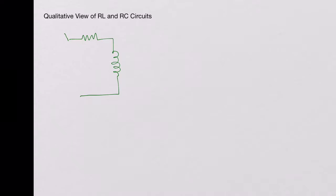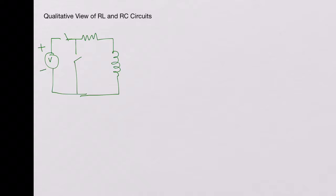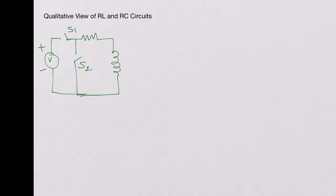Let's look at the RL circuit. We have two switches here: switch S1 to connect the RL circuit across a DC voltage source V, and another switch S2 to short the circuit to ground. This is R and this is L.